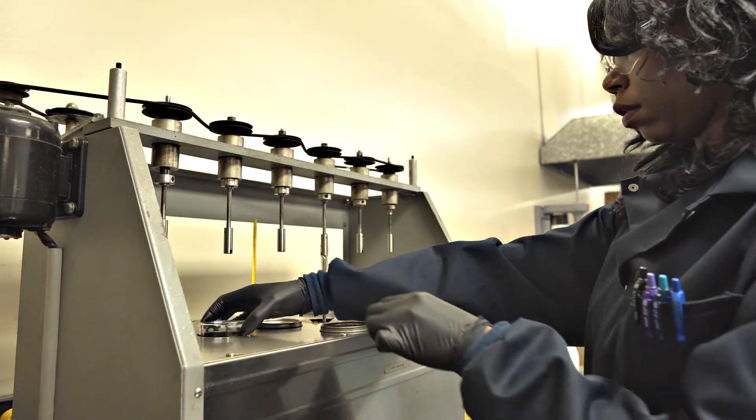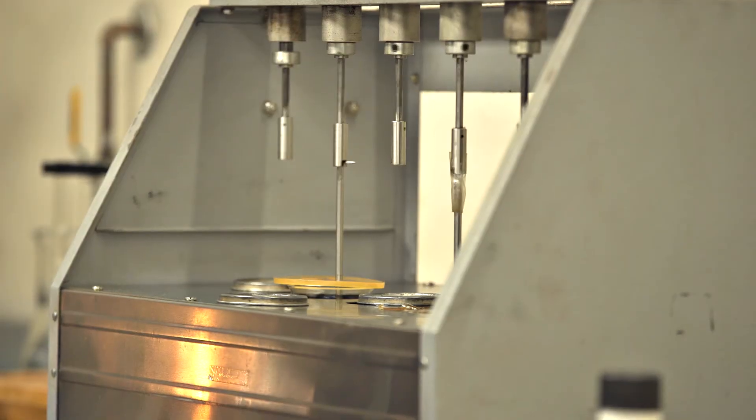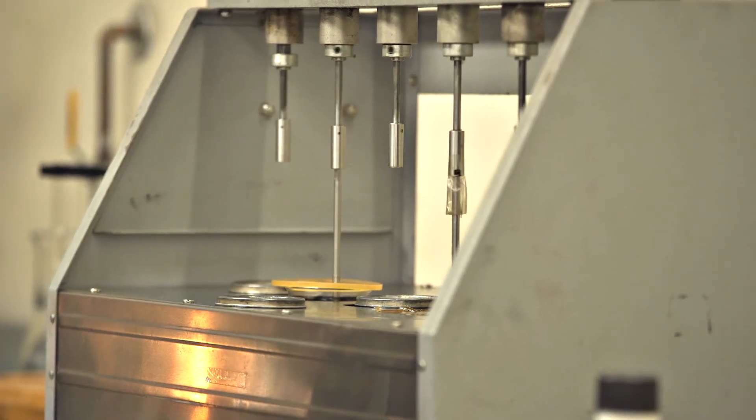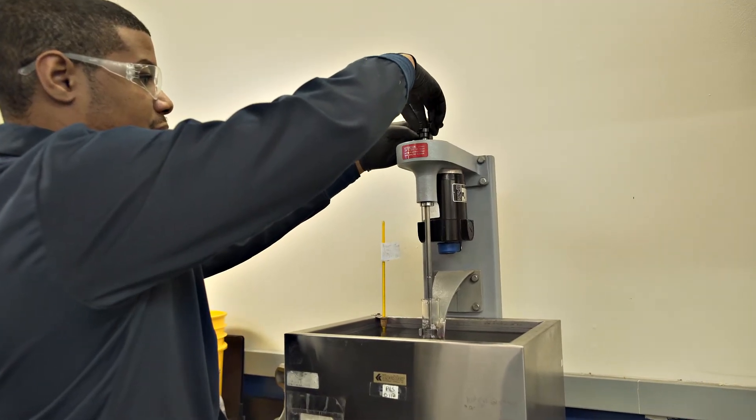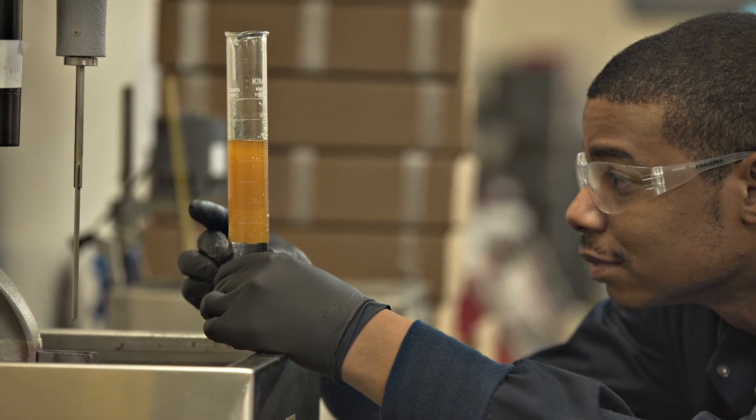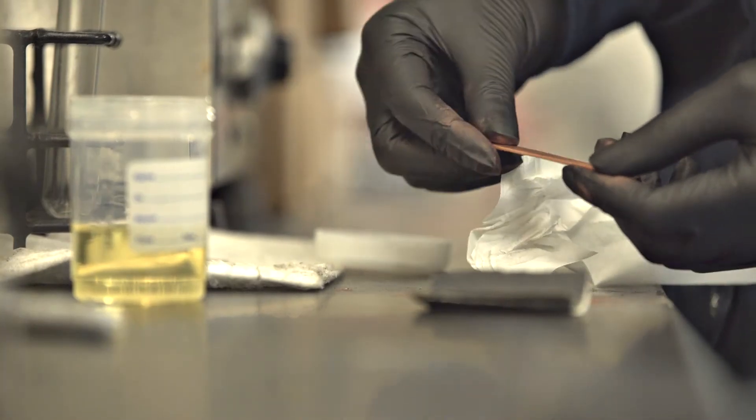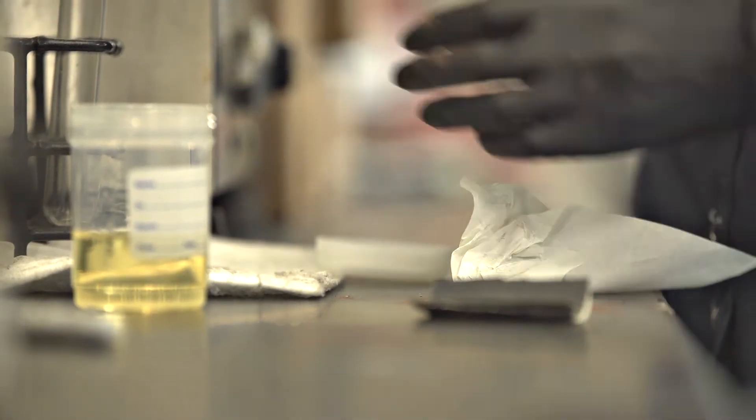Rust test measures for rust inhibitor performance. Water separability to ensure turbine oils readily shed free water so that it is not suspended in the fluid and carried throughout the system. Copper strip corrosion to verify corrosion protection.